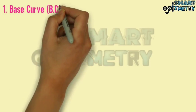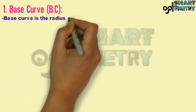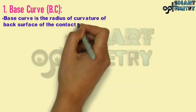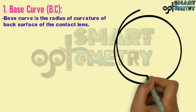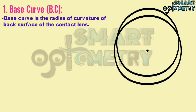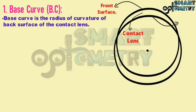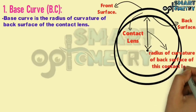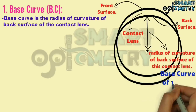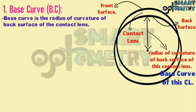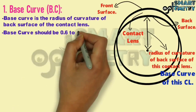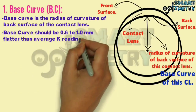Now let's start with base curve. Base curve is the radius of curvature of the back surface of the contact lens. Here in this figure, this is the front surface of the contact lens, this is the back surface, and this is the radius of curvature of the back surface — or the base curve of the contact lens. The base curve should be 0.6 to 1 mm flatter than the average K reading.